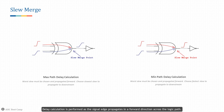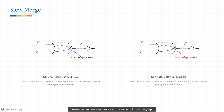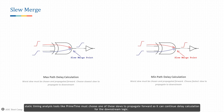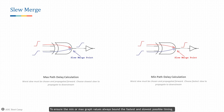Slew merge: delay calculation is performed as the signal edge propagates forward across the logic path. When computing timing on a chain of buffers, we derive the input slew of the next stage from the output slew of the previous stage, storing results on the timing graph as we propagate forward. However, when two slews arrive at the same point on the graph, static timing analysis tools like PrimeTime must choose one of these slews to propagate forward. One common case is the output pin of a multi-fanin cell where multiple timing arcs converge. These points where a slew must be chosen are called slew merge points. To ensure the min/max graph values always bound the fastest and slowest possible timing, the worst slew must be chosen and propagated forward.